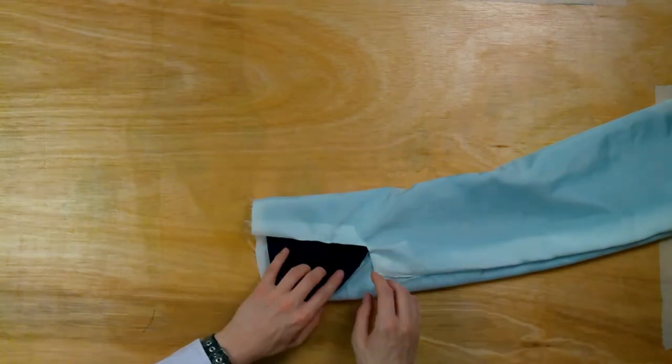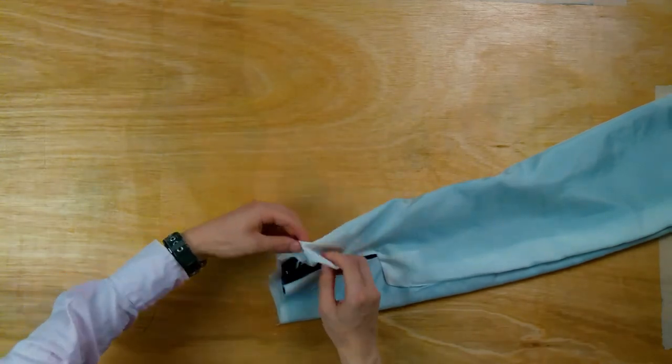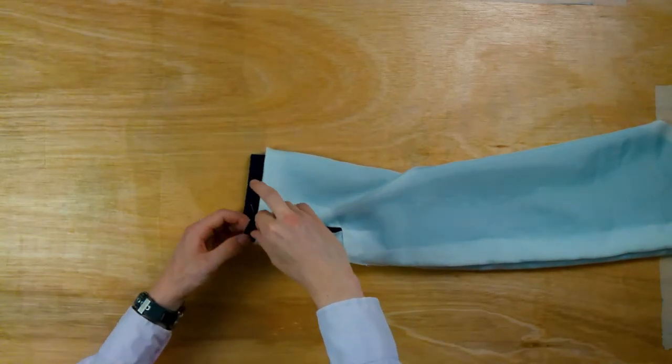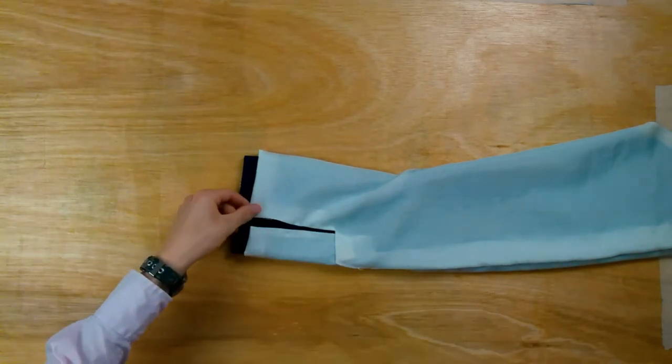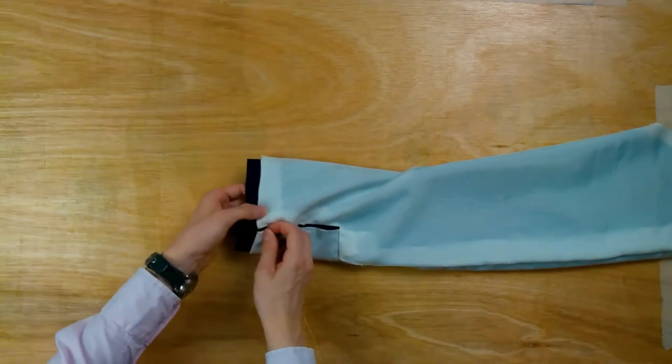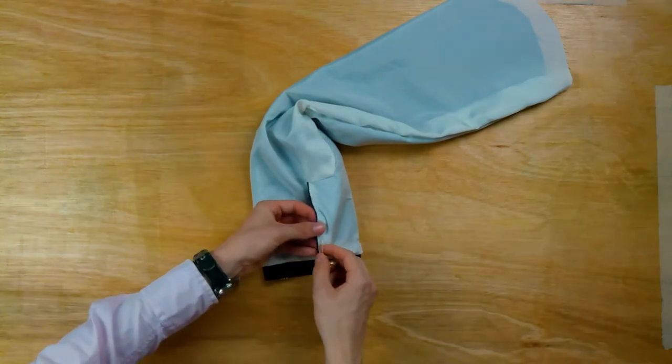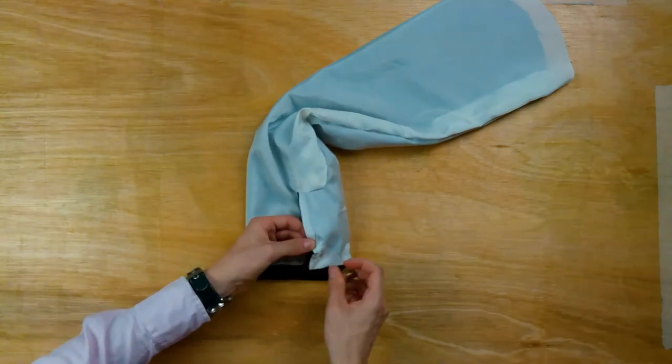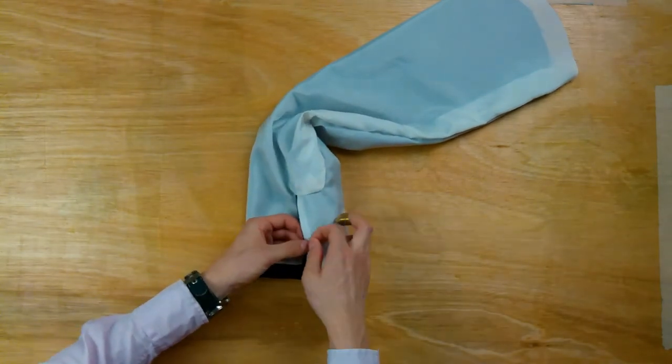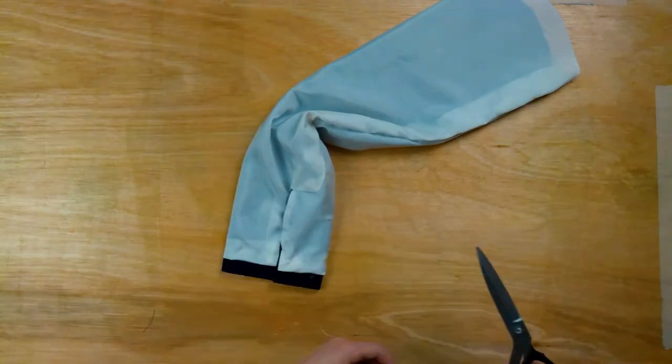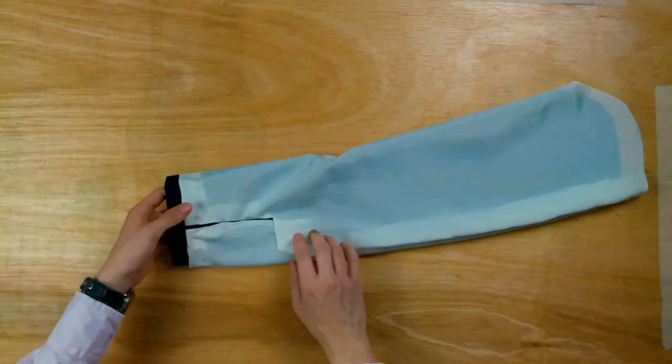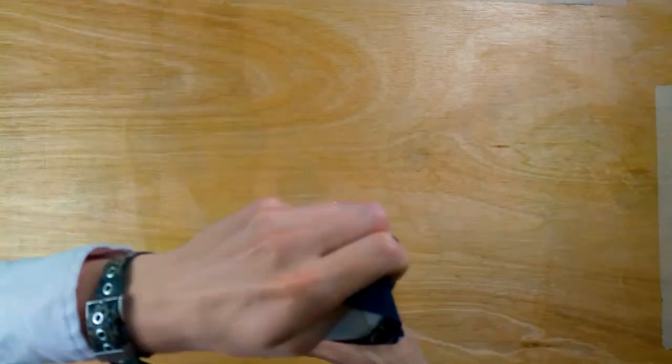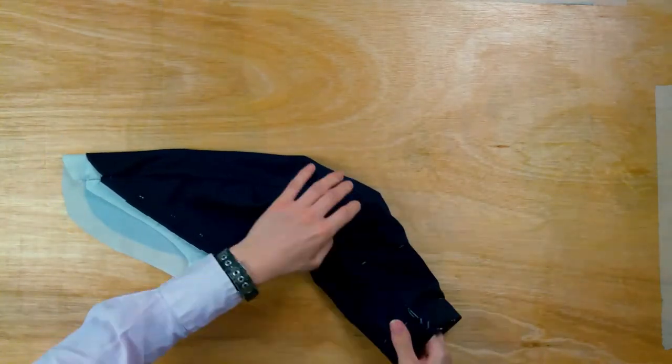Fold the lining up and baste it around the edge. Then turn it through. You can then re-mark the inlay on the armhole. You can do a running stitch on the inlay, so that it's easier to see from both sides when joining it to your jacket.